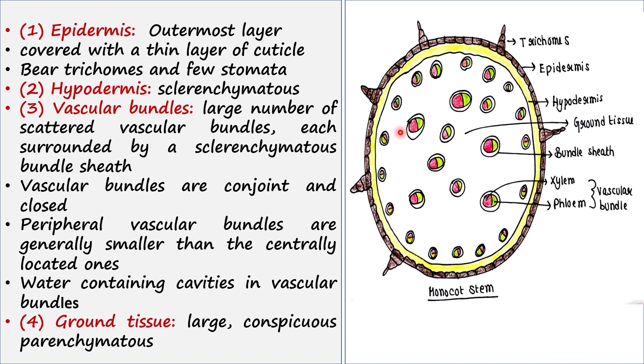Next to hypodermis you can find the vascular bundles. Vascular bundles are composed of xylem and phloem. Here you can see that large number of vascular bundles are scattered here and there, and each of them is surrounded by a layer called bundle sheath.